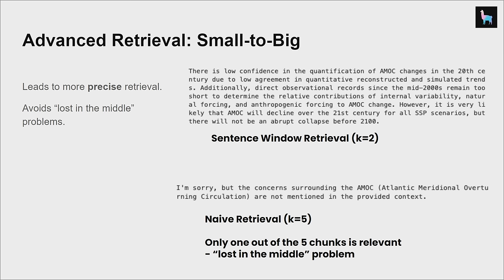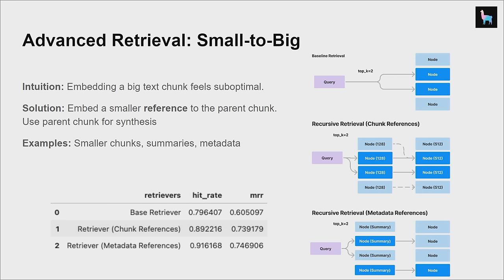This leads to more precise retrieval. You retrieve on more granular pieces of information — smaller chunks — making them more likely to be retrieved when you ask a query. But then you want to make sure the LLM has access to more information to actually synthesize a proper result. This helps avoid loss-in-the-middle problems — you can set a smaller top-K like K equals 2, whereas naive retrieval over big text chunks with K equals 5 starts returning a lot of context. A very related idea is embedding a reference to the parent chunk — or a summary or questions that answer the chunk — rather than the raw text chunk itself, which we've found improves retrieval performance.